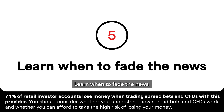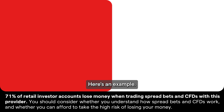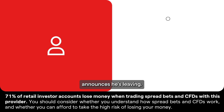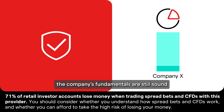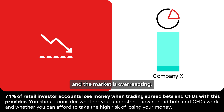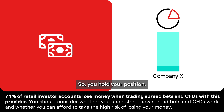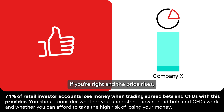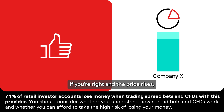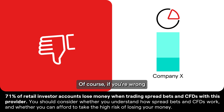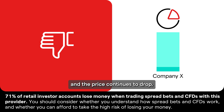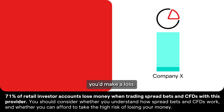5. Learn when to fade the news. Here's an example: the CEO of Company X announces he's leaving. The stock falls, but you believe the company's fundamentals are still sound and the market is overreacting. So you hold your position. If you're right and the price rises, you could profit. Of course, if you're wrong and the price continues to drop, you'd make a loss.